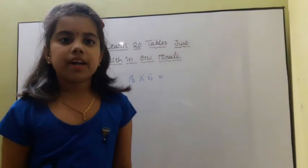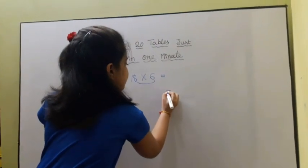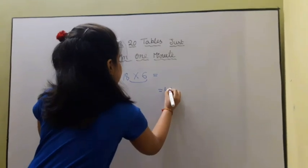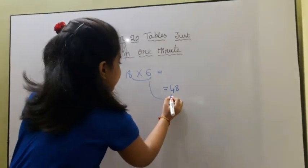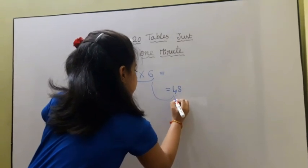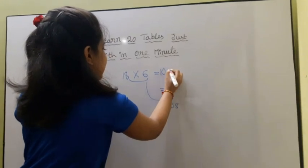First we multiply 8 into 6 is equal to 48. Then we add 6 into 10's place. Now answer is 108.